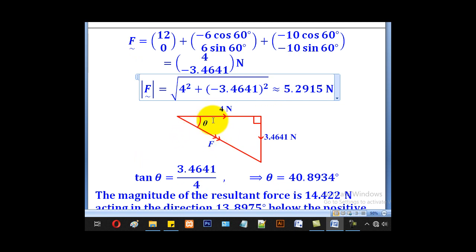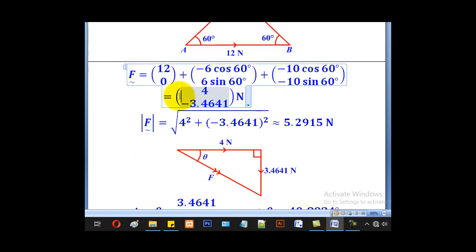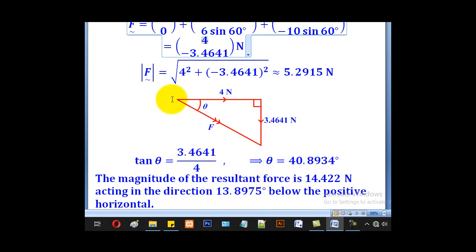For the direction, you have to first come to the vector of the resultant. 4 is positive, which is that, 3.4641 is negative, so it will be downward. The line joining the starting point to the end point will denote the resultant force. So this is opposite, this is adjacent, meaning tan theta will be equal to opposite over adjacent.